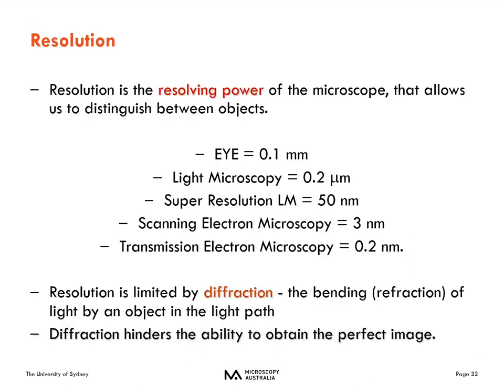The resolution you need determines which microscopy technique to use. The eye resolves down to about 0.1 mm. Light microscopy can image down to about 0.2 microns. Super-resolution light microscopy techniques can reach about 50 nm resolution. Electron microscopy techniques like scanning EM offer 3 nm resolution, and transmission EM offers about 0.2 nm resolution. Light microscopy resolution is fundamentally limited by diffraction.